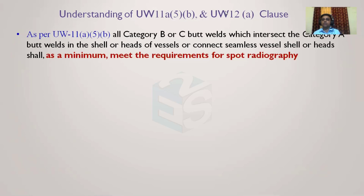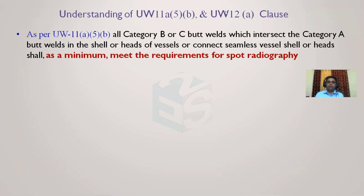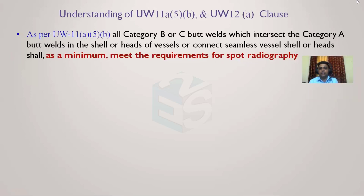As per UW-11a5b, all category B and C butt joints which are connected to category A butt welds should at least satisfy the spot radiography requirement as a minimum. So all category B and C butt welds connecting to category A butt welds in shells or heads of the vessel, or connecting seamless vessel shells or heads, should as a minimum satisfy the spot radiography requirement.